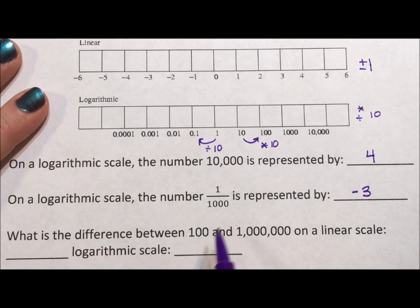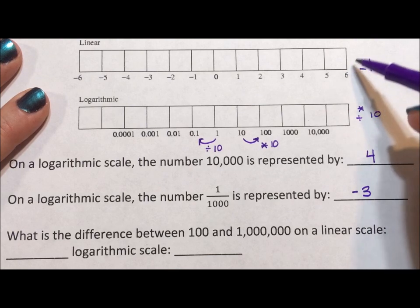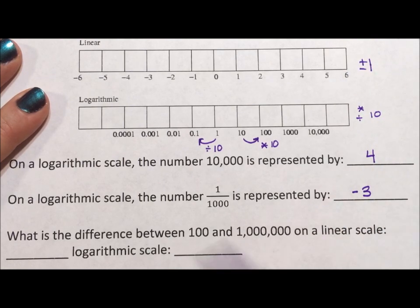What is the difference between 100 and a million on a linear scale? Well, on a linear scale where each tick mark is a difference of plus or minus 1, this is a difference of 999,900. We just take a million minus 100 because that's the difference on our linear scale.